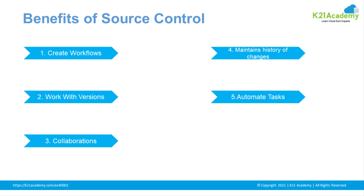Source control is used by your entire organization — not just your team. Whether you're using Git or TFS version control, it requires collaboration across multiple teams. You can maintain a history of versions going back 5 or 10 years. The main advantage is that you can automate as many tasks as possible, which is the core use of a source control system.